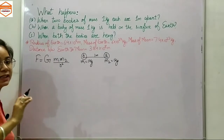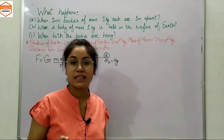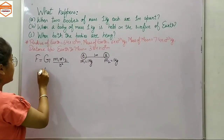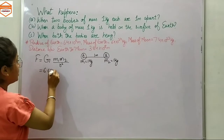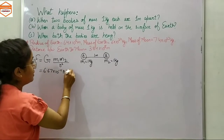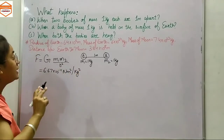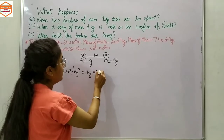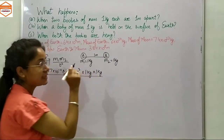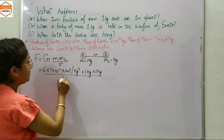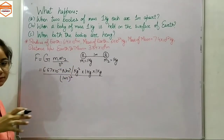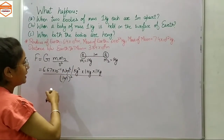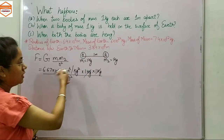The formula for gravitational force of attraction is F = G·M₁·M₂ / r². The value of G, the universal gravitational constant, is 6.67 × 10⁻¹¹ newton·meter² per kilogram². Mass M₁ is 1 kilogram, mass M₂ is 1 kilogram, and the distance r is 1 meter.